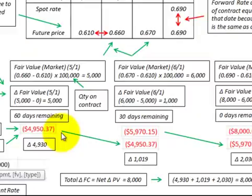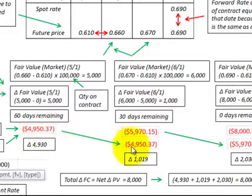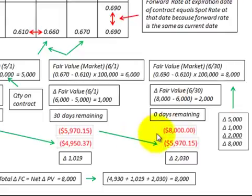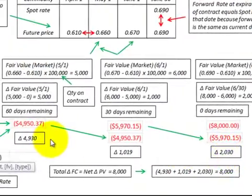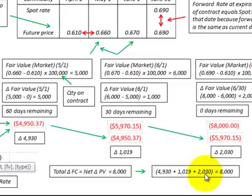To determine the cumulative amounts for the forward contract: for May 1st, starting from zero, the change is $4,950. For June 1st, we subtract the prior present value of $4,950 from the current period's $5,970, giving a change of $1,020. For June 30th, we subtract $5,970 from $8,000, giving a change of $2,030. Totaling $4,950 + $1,020 + $2,030 = $8,000, which matches the total change from contract start to end.